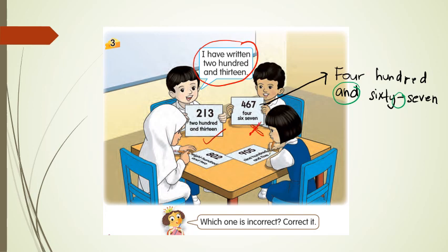Look at the third one: 8-0-2. How is it written? Eight hundred and two. Is it correct? Yes — eight hundred and two is correct. Last one: 9-0-5. Nine hundred and five. Is it correct? Nine hundred and five — yes, it's correct.